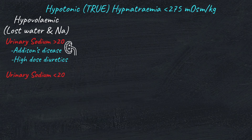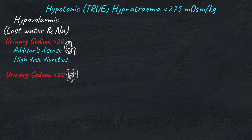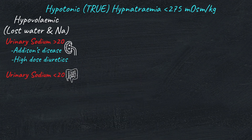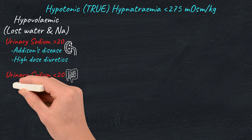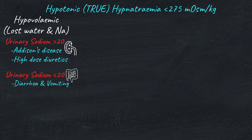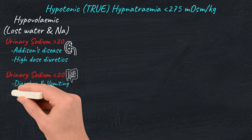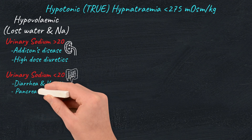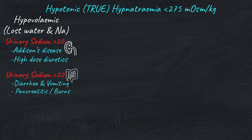If urinary sodium is less than 20, then the loss of water and sodium is not from the kidneys. Causes include diarrhea and vomiting, and also third spacing from major burns or pancreatitis. The treatment for hypovolemic hyponatremia is simply rehydration with isotonic — or in other words, normal — saline.